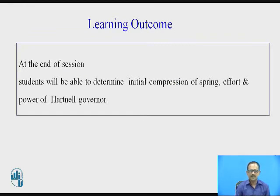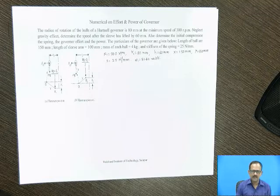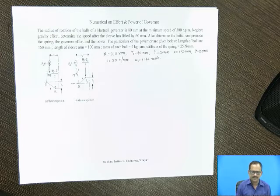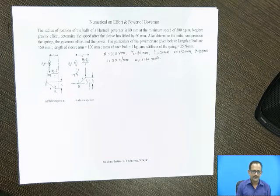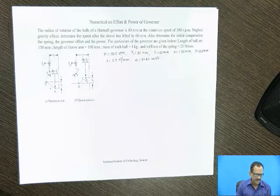At the end of the session, students will be able to determine initial compression of spring, effort and power of Hartnell Governor. The statement of the problem: the radius of rotation of the balls of a Hartnell Governor is 80 mm at minimum speed of 300 rpm. Neglecting the gravity effect, determine the speed after the sleeve has lifted by 60 mm. Also, determine the initial compression of the spring, the governor effort and power.